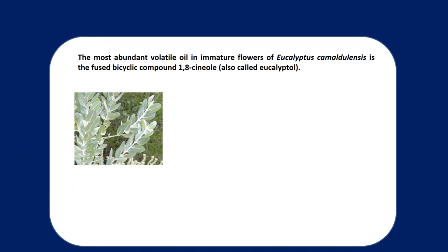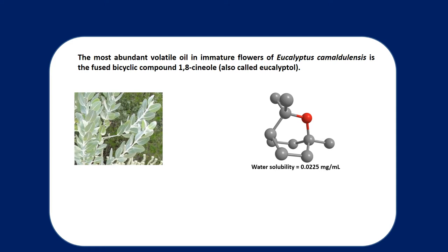Now that we've discussed the theoretical nature of distilling immiscible mixtures, let's take a look at a more realistic example. Let's take eucalyptus, which is a source of a compound known as 1,8-cineol, also sometimes called eucalyptol. Eucalyptol, as you can tell from its structure, is a very low polarity compound and is essentially immiscible in water. In fact, eucalyptol's solubility in water is about 0.0225 milligrams per milliliter.